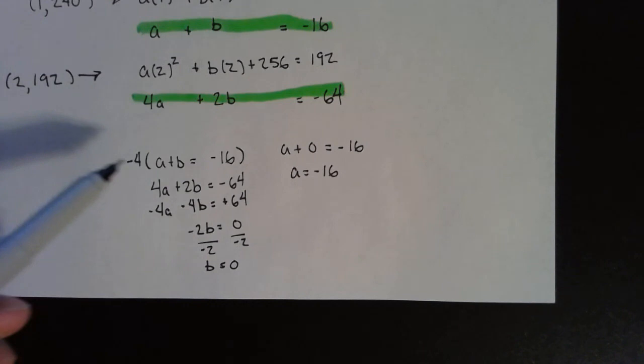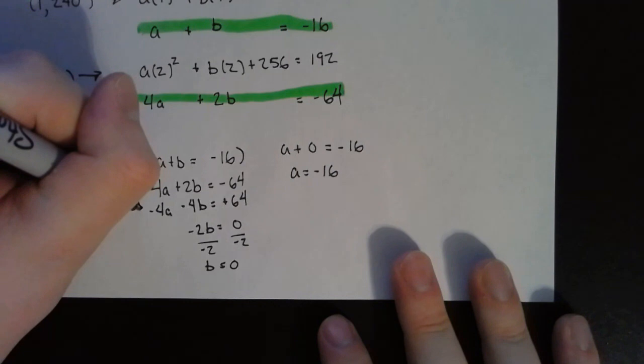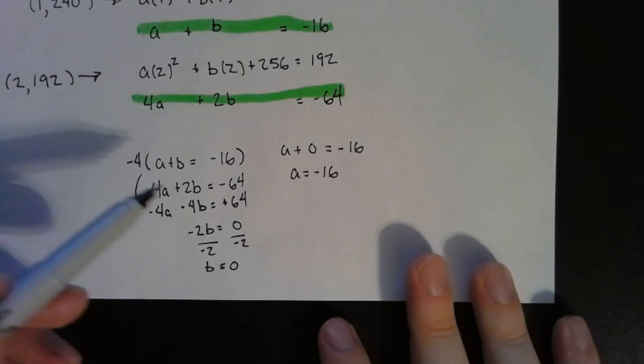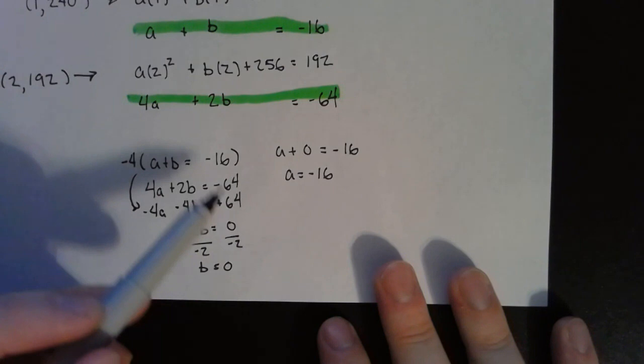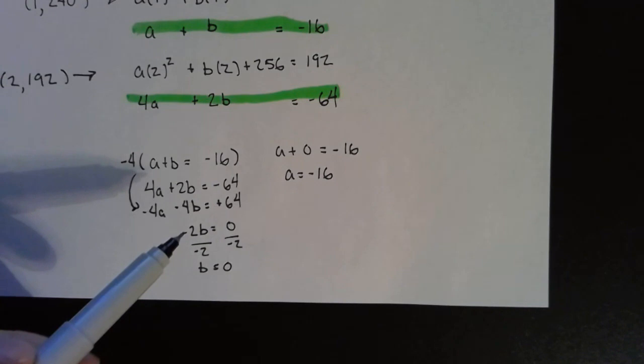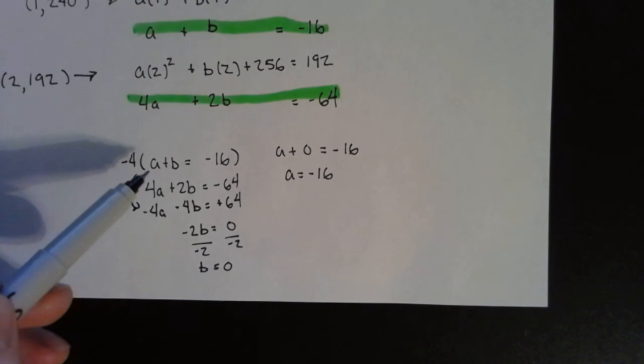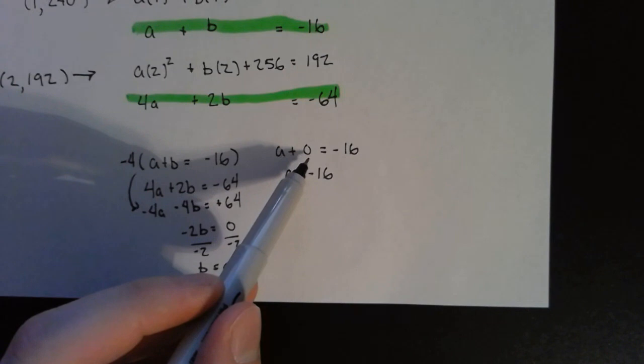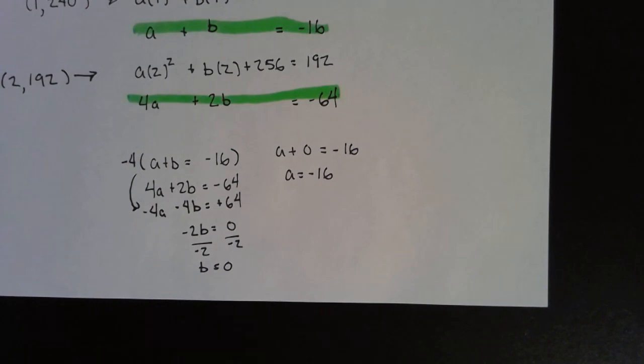All right, so I multiplied this top equation by negative 4 like I said, and I ended up getting this equation down here: negative 4a minus 4b equals a positive 64. So I eliminated that a term and 2b minus 4b gives you a negative 2b, and then these 64s cancel each other out. Negative 64 plus 64 gives me zero. So divide both sides by negative 2, I get b equals zero. Now that I know what b is, I can plug it back in. I plugged it back into this equation here. But a plus, instead of b I plugged in my zero, equals negative 16. So really a equals negative 16.